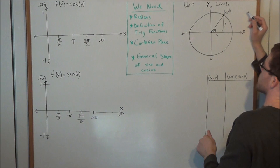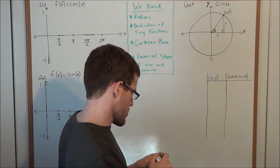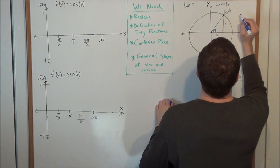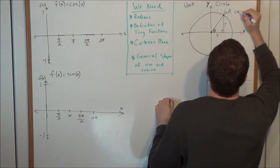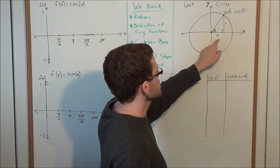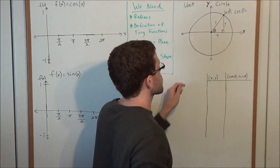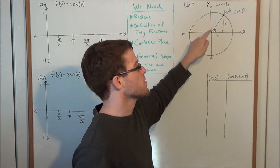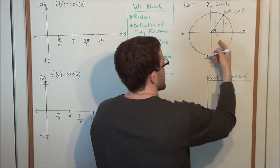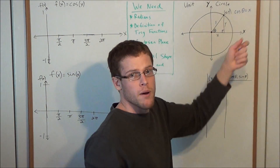So what can we say about angle theta? Using the definitions of trigonometric functions, cosine of angle theta is equal to the adjacent side of this right triangle divided by the hypotenuse. But the hypotenuse is going to be 1, because we're on the unit circle, which is centered at the origin and has a radius of 1. So adjacent to angle theta is x, divided by the hypotenuse 1, which is just x.